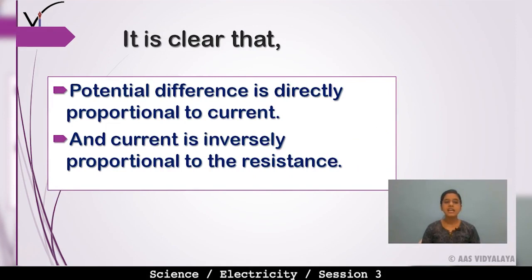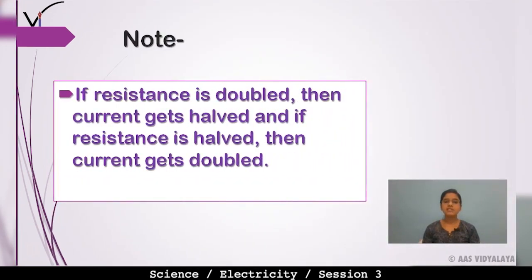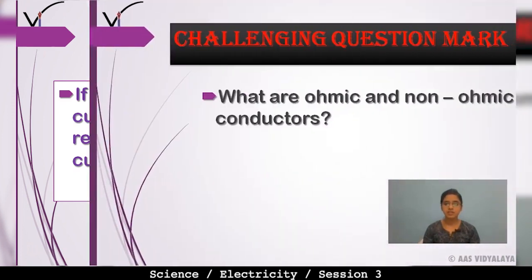From this formula, two things are clear: first, potential difference is directly proportional to the current; second, current is inversely proportional to the resistance. As a note: if resistance is doubled, then current gets halved; and if resistance is halved, then current gets doubled.